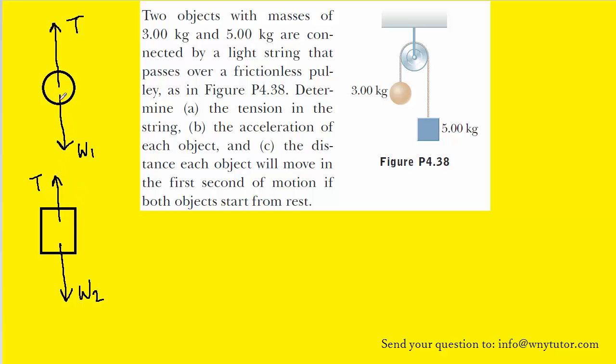They both also of course have a weight force which acts downward, that's the force of gravity pulling each one downward. So we have W1 for the circular object and W2 for the square shaped object.